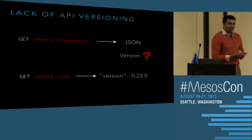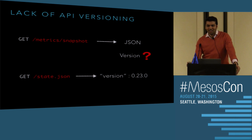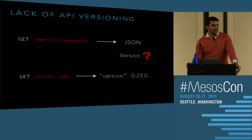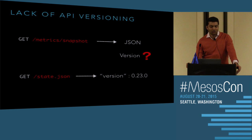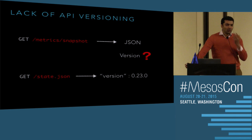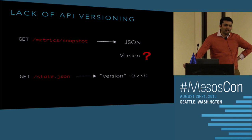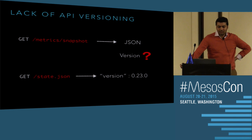We also never had a good versioning story for Mesos. The only versions we currently have are release versions. If you're an admin hitting our metrics API endpoint, you get a JSON blob but you don't know what the schema is — you have to look into the code. If it changes from version to version, you have no idea. Some operators ended up hitting state.json, getting the version, and then having a big switch statement: if it's version 23, use this schema; if it's 24, use that schema. It's horrible.